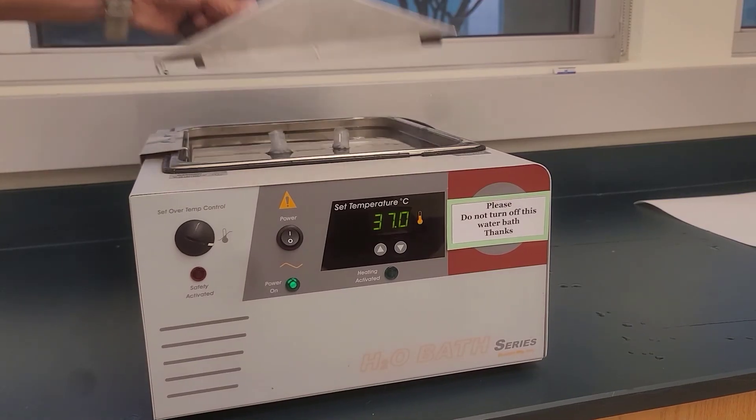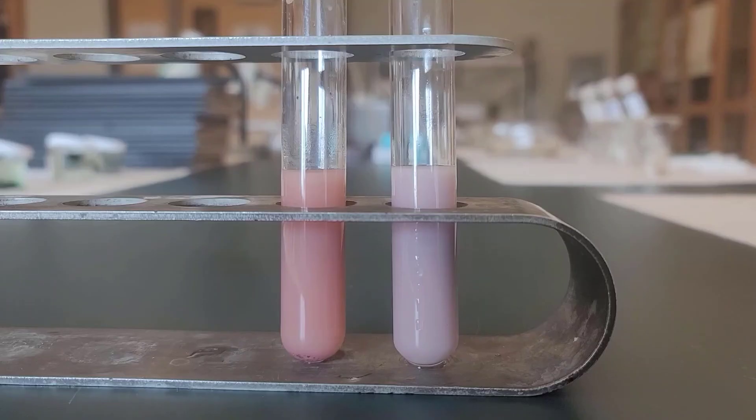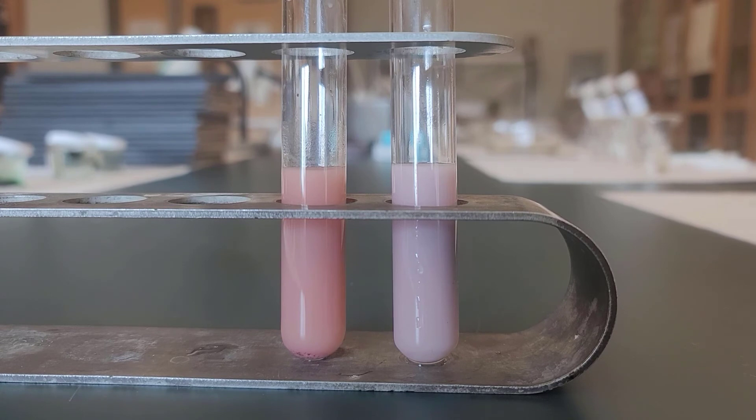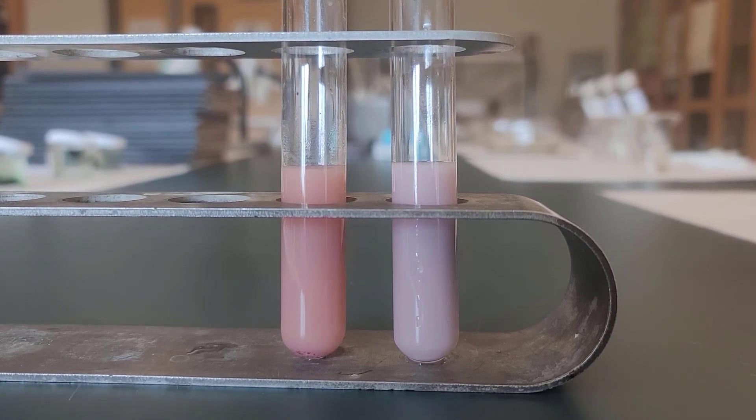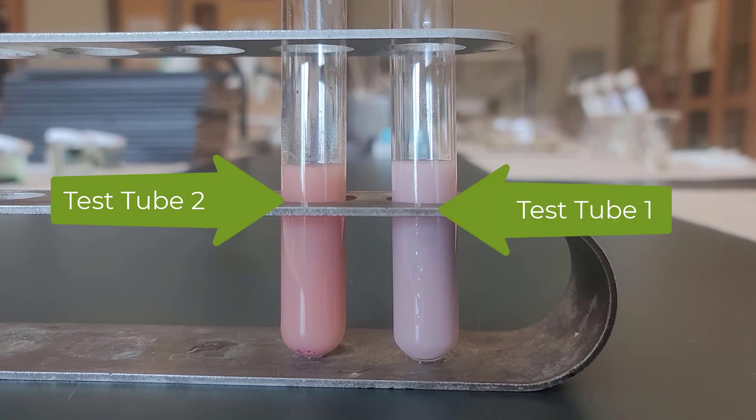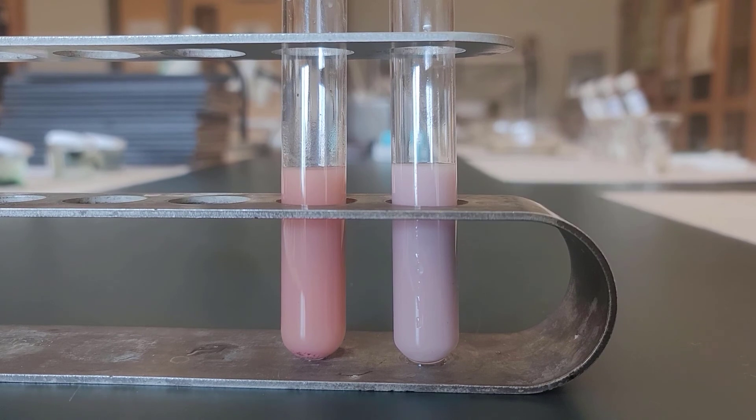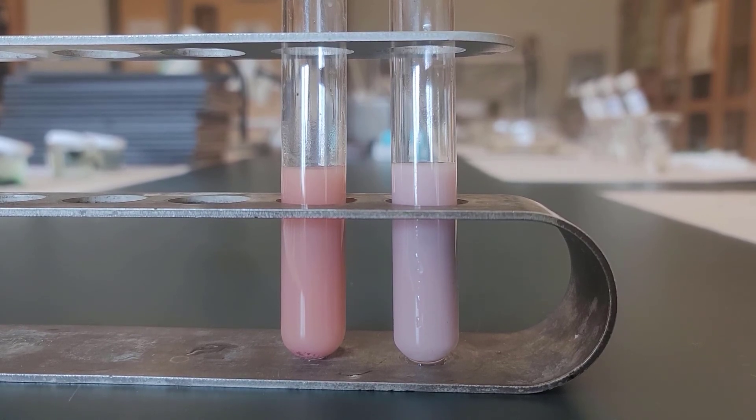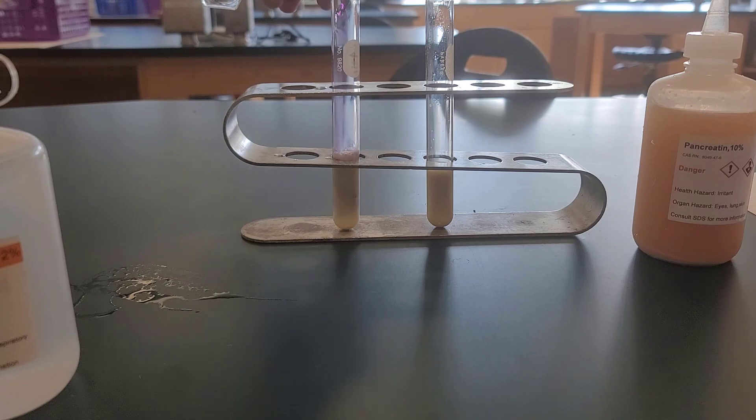When we take the tubes out, this is what they end up looking like. And it's a little subtle and maybe a little bit hard to tell, but hopefully you can see that test tube two is a little bit more red or a little bit more pink than test tube one, which is a little bit more on the bluer side. So that's the results of the classic pancreatic lipase experiment.